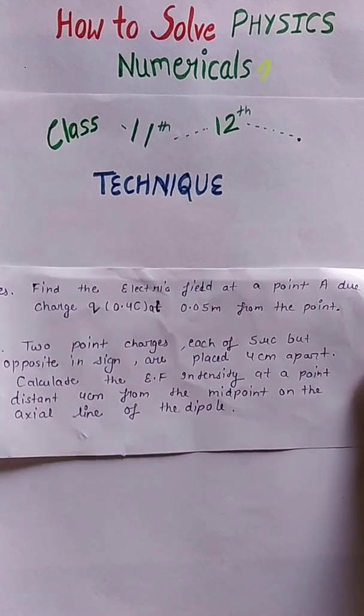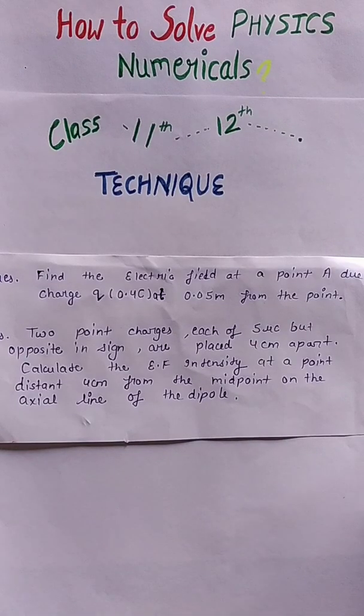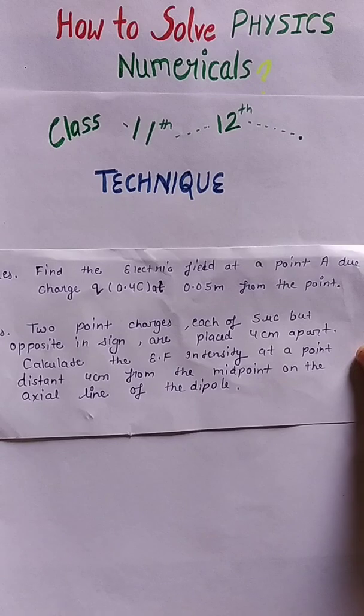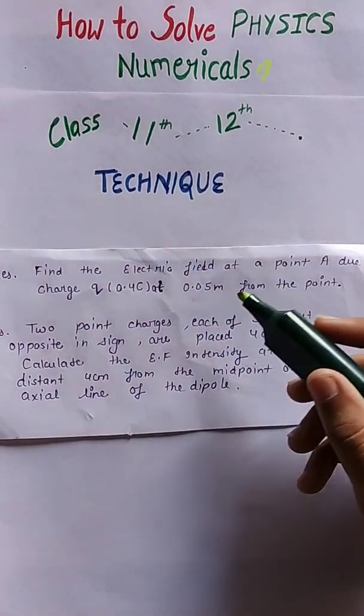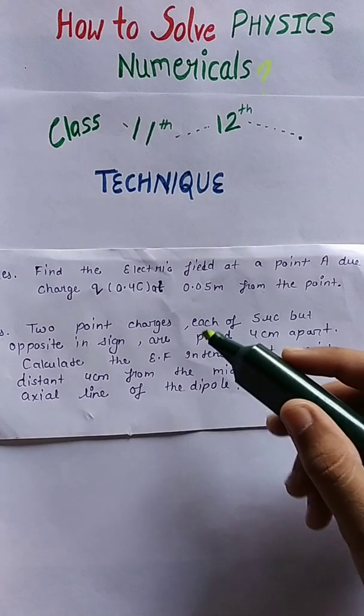I picked up a few examples from class 12 NCERT physics and we will solve them in this video. Question first is: find the electric field at a point due to charge q. The charge is 0.4 coulomb at 0.05 meter from that point.